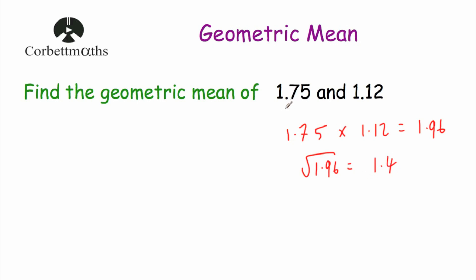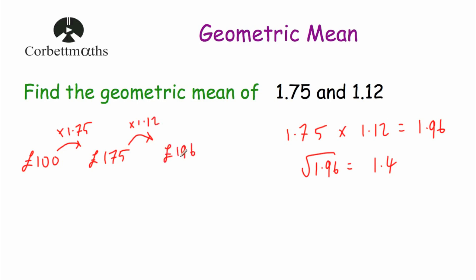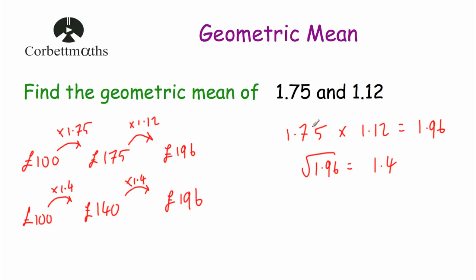So the geometric mean of 1.75 and 1.12 is 1.4. That means instead of doing a 75% increase and then a 12% increase, we could apply a 40% increase twice — that's the mean average. For example, starting with £100: increasing by 75% gives £175, and then increasing by 12% gives £196. Equally, if we take £100 and apply a 40% increase twice — multiplying by 1.4 gives £140, then multiplying by 1.4 again gives £196. If we had used the arithmetic mean of the 75% and 12% increases instead, it wouldn't give us the same answer applied twice. So the geometric mean is the most suitable here.